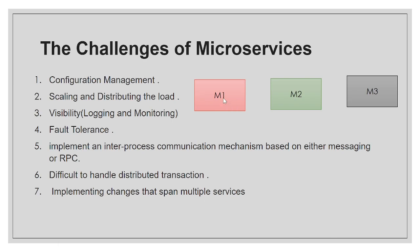The last challenge is implementing changes that span multiple services. Suppose you are changing something in M1 and that change is also required in M2 — it is a challenging thing because one change can span multiple services, requiring updates across other services as well. So these are the different kinds of challenges we face while developing microservices.